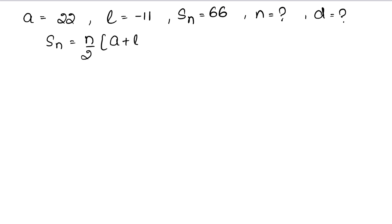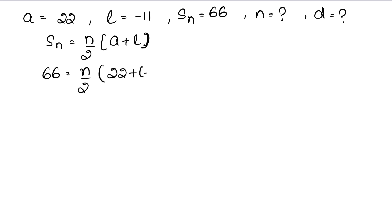Toh sum of nth term ka formula hota hai: Sn = n/2 into (a + l). Toh Sn kitna de raha hai — 66 equals n upon 2, a hai humara 22 plus minus 11.